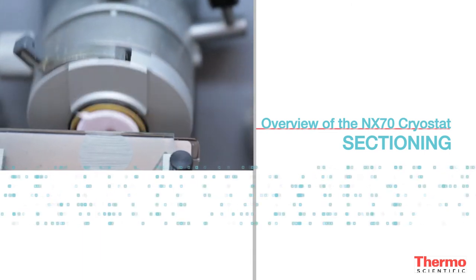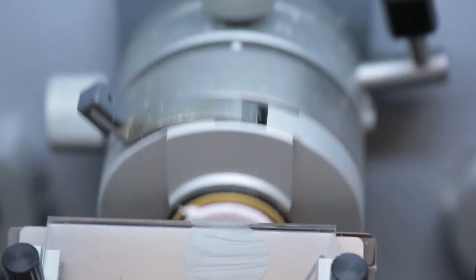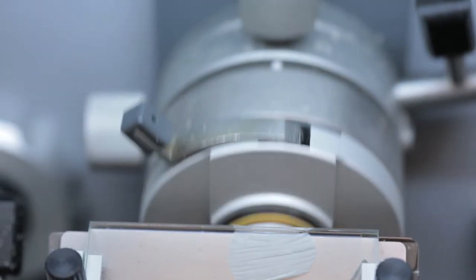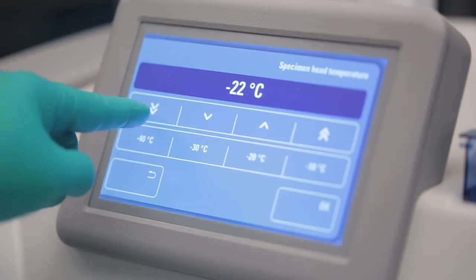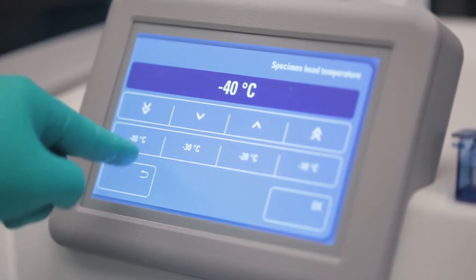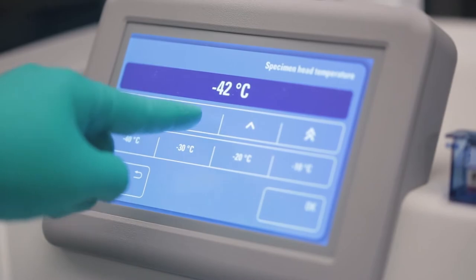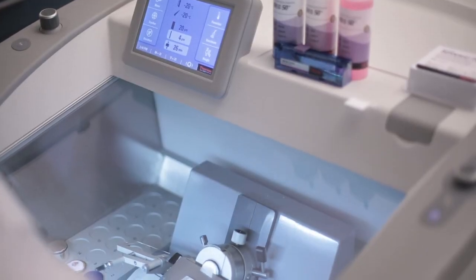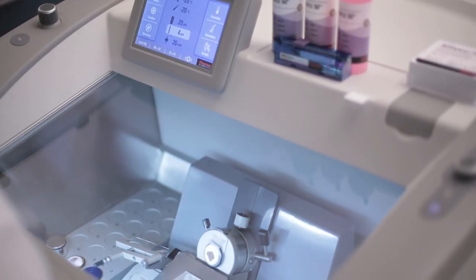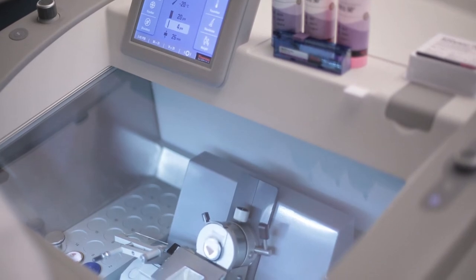The rapid response temperature control helps achieve high quality sectioning by actively cooling the object head. The temperature can be adjusted by the user to the specific temperature required for the sample being sectioned. This improves consistency and results compared to traditional methods.